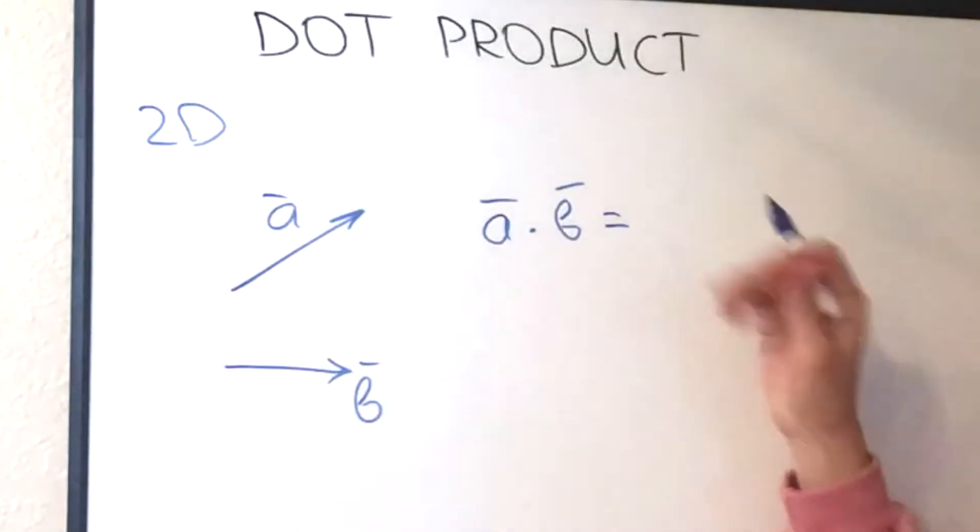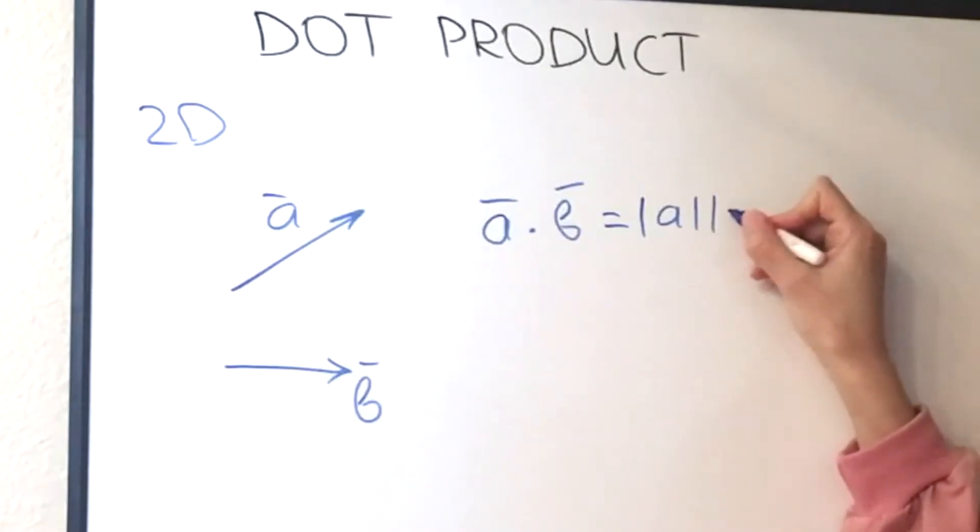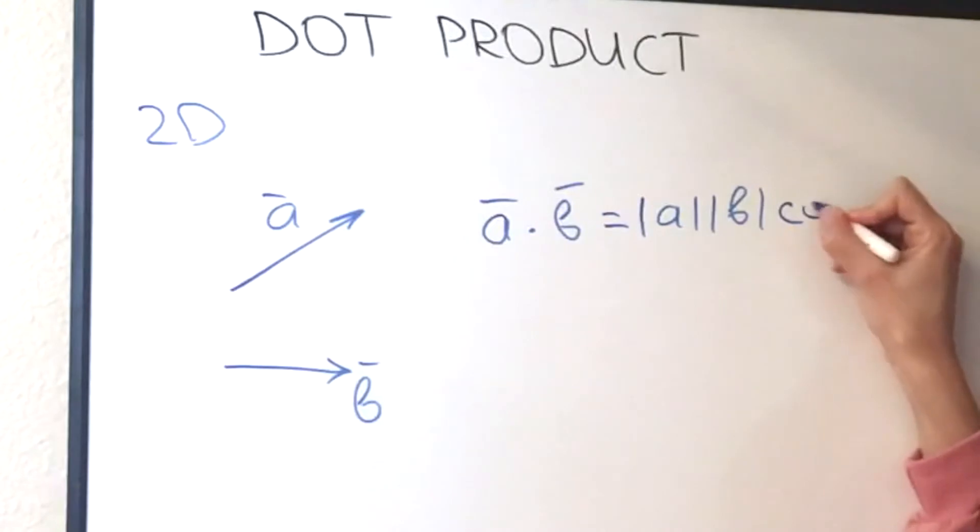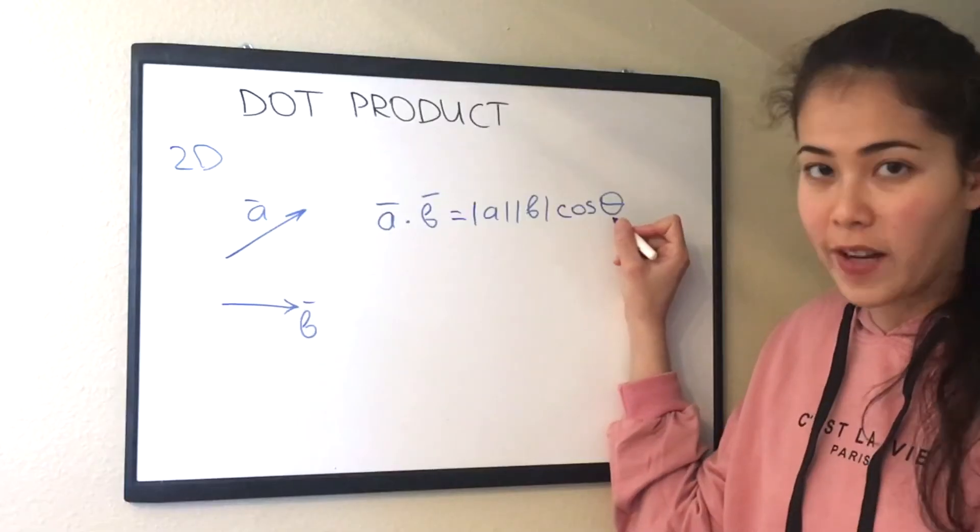Well mathematics tells us that the dot product of two vectors is equal to the magnitude of the first vector multiplied by the magnitude of the second vector. Remember there is no dot here, it's just a multiplication of two numbers multiplied by the cosine of the angle between those two vectors.